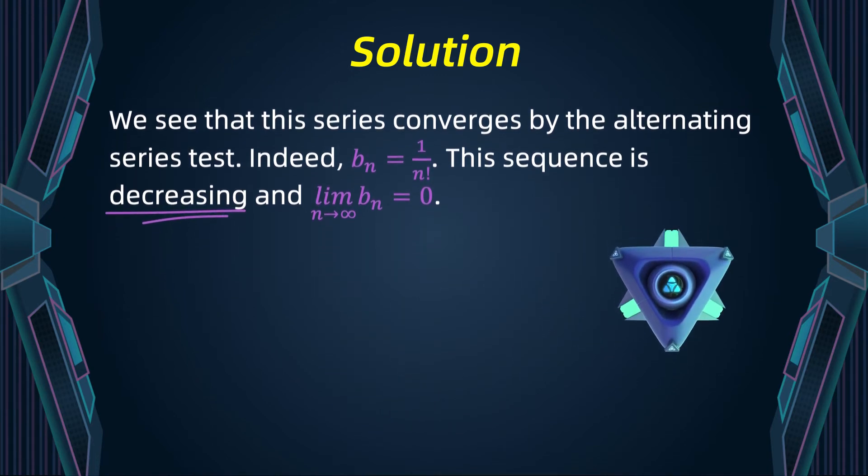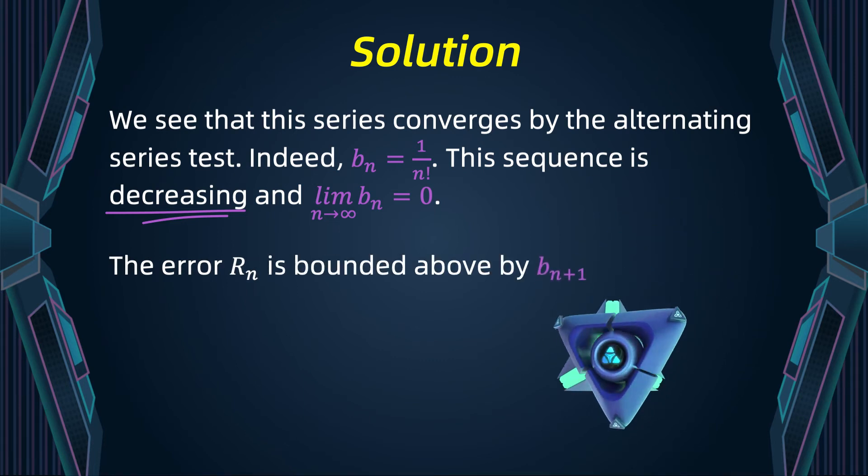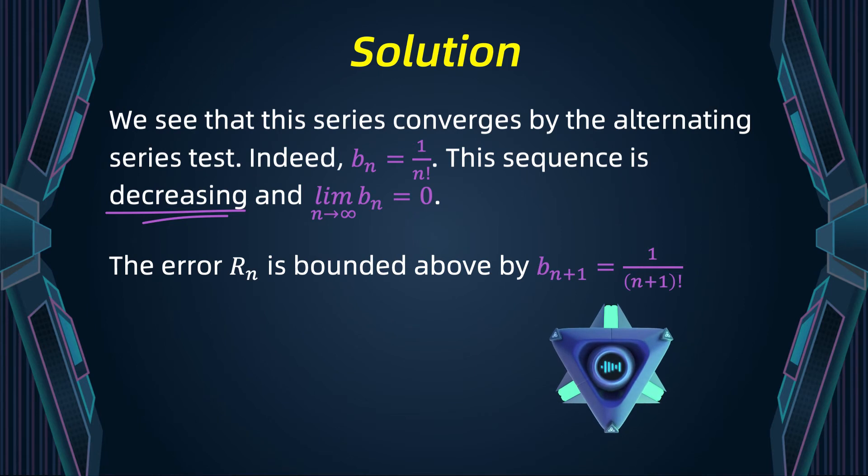Now, our goal is to approximate its exact value by the partial sum. Rn represents the error and it is bounded above by bn plus one. bn plus one is one divided by n plus one factorial. We want bn plus one to be small enough so that our approximation has the accuracy we desire.